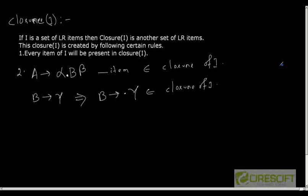If i is a set of LR items, then we create closure of i by following certain rules. The rules are: every item of i will be present in closure of i, and if I have an item A as alpha dot B beta which belongs to closure of i, and another production in the grammar is B equal to gamma, then the item B as dot gamma will also be included in closure of i.